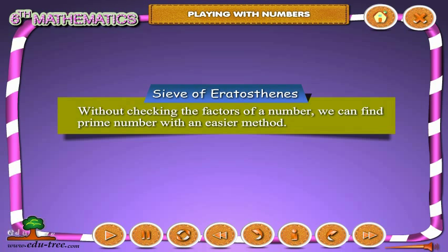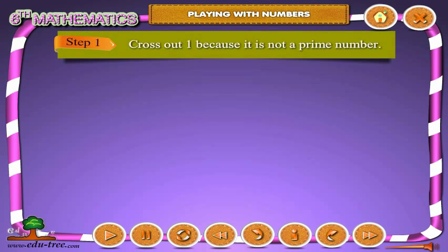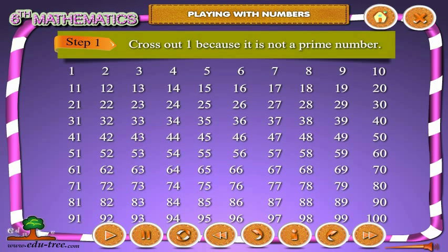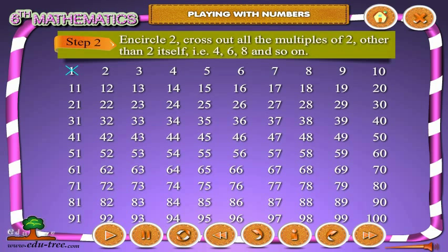Without checking the factors of a number, we can find prime numbers with an easier method. Step one: cross out one, because it is not a prime number. Step two: circle two and cross out all the multiples of two other than two itself — that is, four, six, eight, and so on.